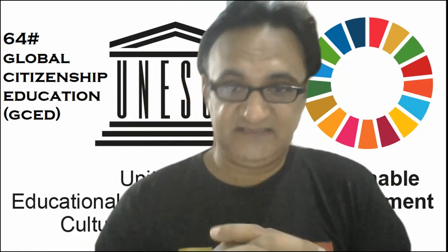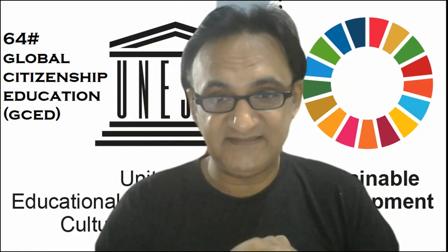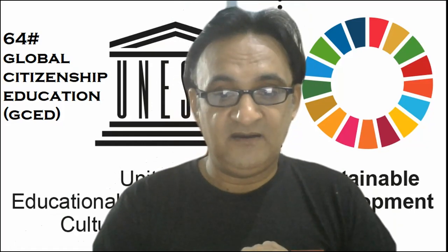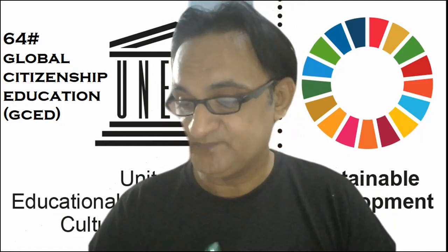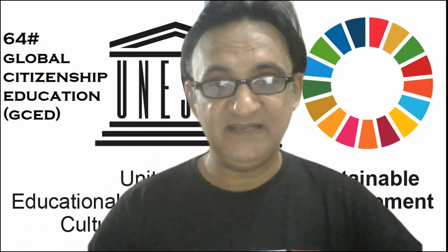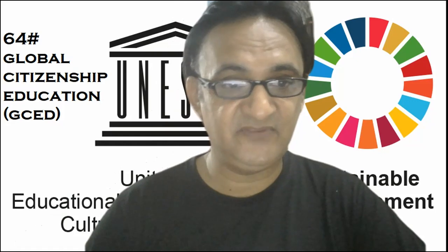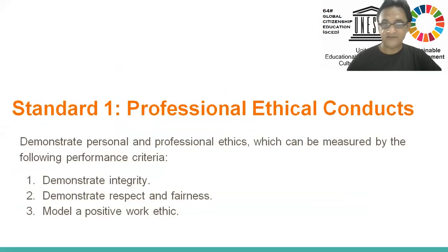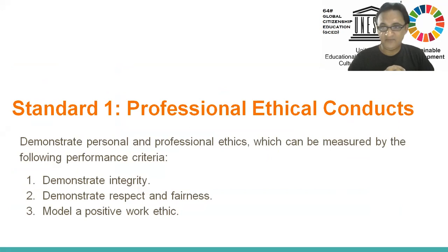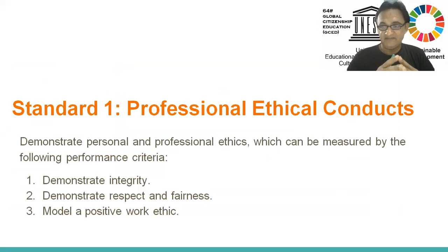You have to stay with me in order to understand what is global citizenship. But before that, I'm going to share information about the performance criteria standards — you can check in the study guide too. So Standard One: Professional Ethical Conduct — demonstrate personal and professional ethics — which can be measured by the following performance criteria. These two components of professional ethics will be measured by these three domains.